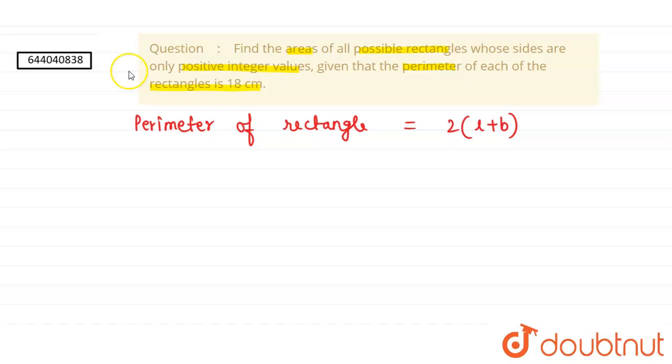Now in the question it is given that the perimeter of the rectangles is 18 centimeters. When this equals two times the sum of length and breadth, the sum of length and breadth will be 9. So this is the first condition. Now it has also said that the sides will be positive integer values, so we will make cases.